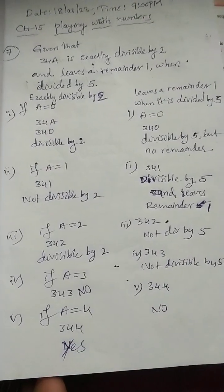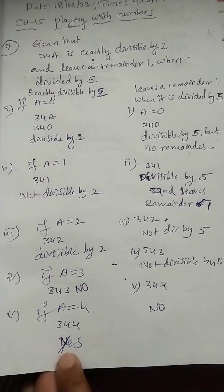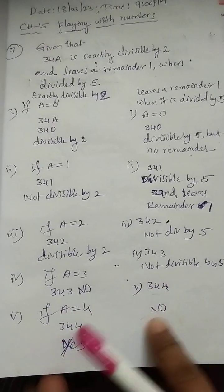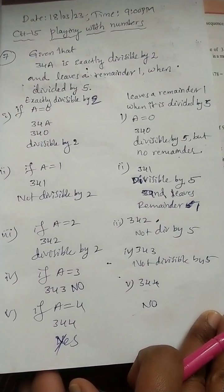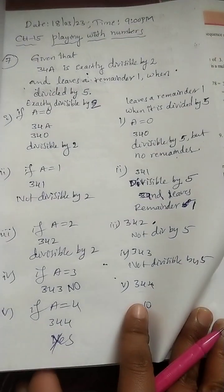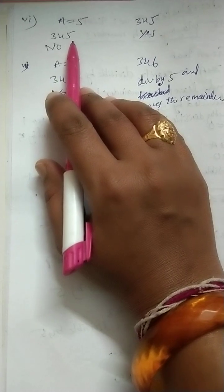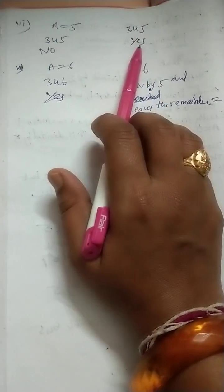If a is equal to 4, we get 344. It is exactly divisible by 2, but it is not divisible by 5. If a is equal to 5, it will become 345. It is divisible by 5 but it is not divisible by 2, so that condition is not satisfying. Go for next.